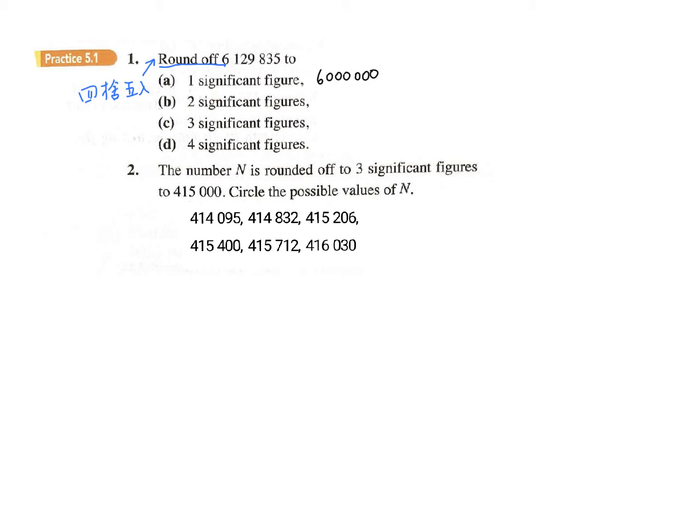For part b, you have to correct to two significant figures, so you will get 6,100,000. And then for part c, you have to round it to three significant figures — one, two, three — meaning here.